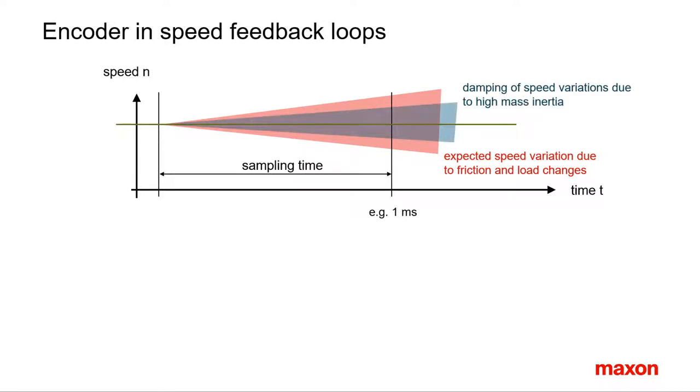High mass inertia dampens this effect. The big question is how much deviation is allowed and how large are the friction and load changes to be expected in relation to the damping effect of inertia. The high sampling rate of the controller and suitable speed control architecture, for instance with a speed observer, can help to keep speed variations small.